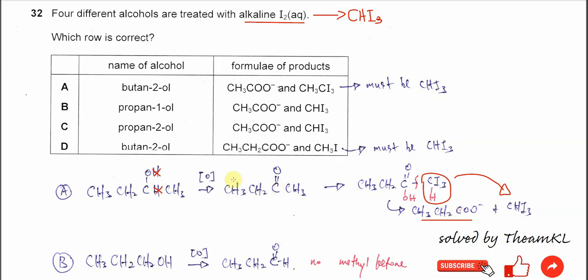Let's look at the answers here. If you use butane-2-ol, it must produce the three-carbon salts, the sodium propanoate and this triiodomethane.